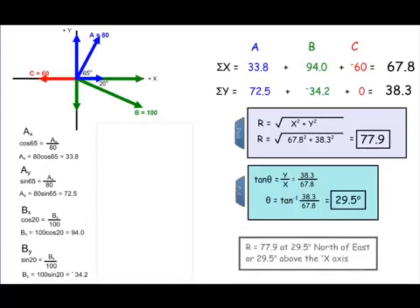You get the same answer: the resultant equals 77.9 at 29.5 degrees north of east. It doesn't matter how you do it — it all depends on your comfort level working with trigonometry. It may take a little longer doing it this way, but if you're more comfortable setting up your expressions off to the side, that's fine. That's how you use algebra to find the resultant when three or more vectors are present.